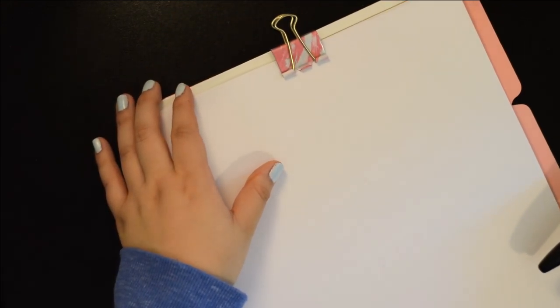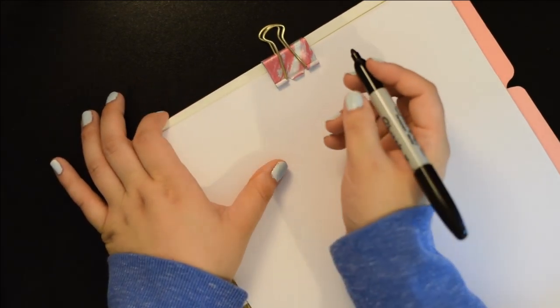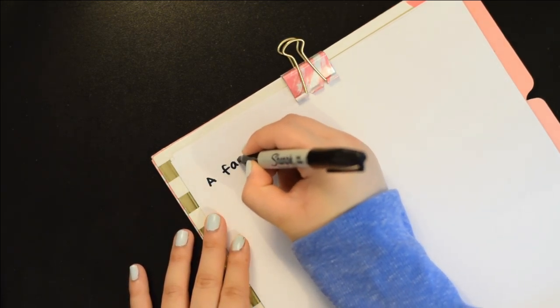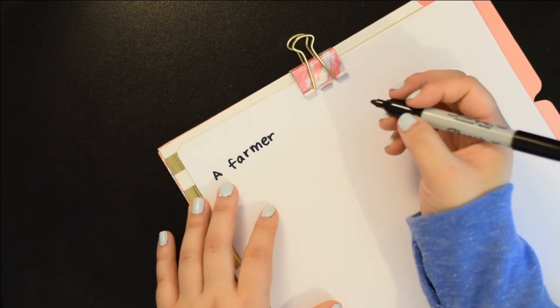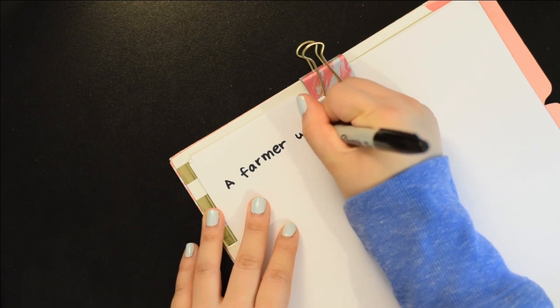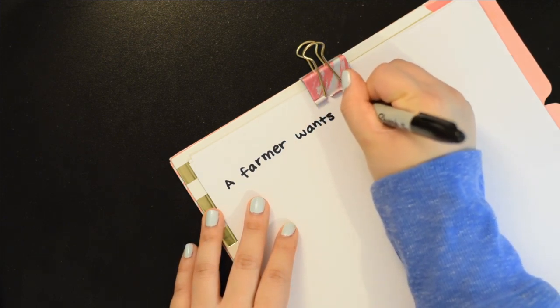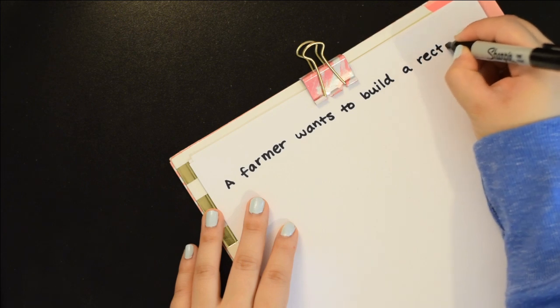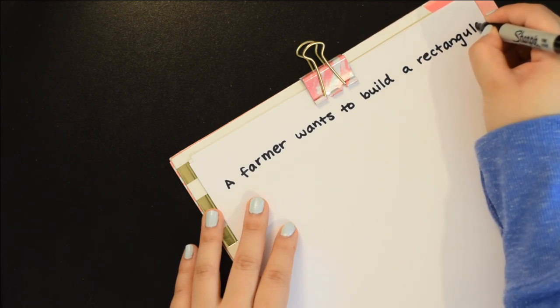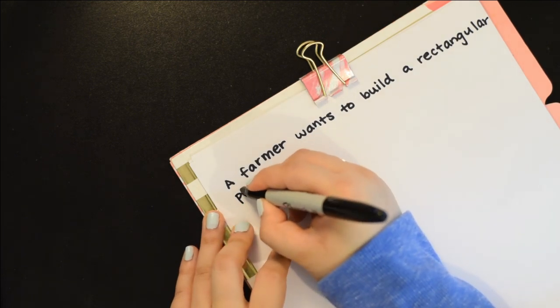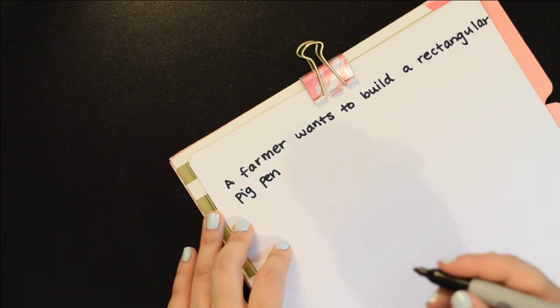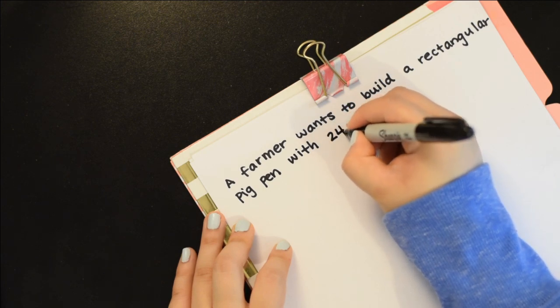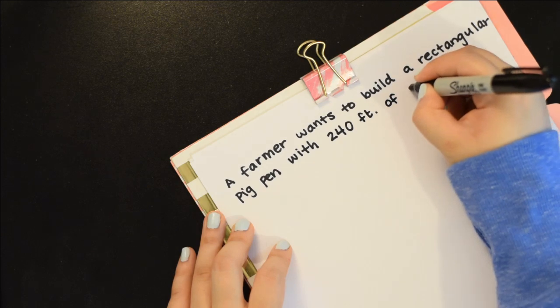Bear with me because I'm writing this out but trying to change the question around. Let's see, let's say a farmer wants to build a rectangular pig pen with 240 feet of fencing.